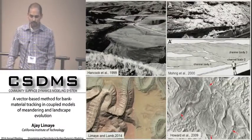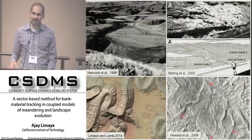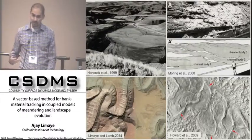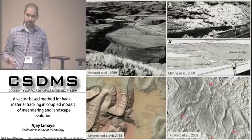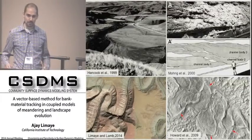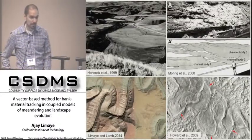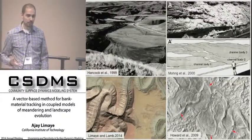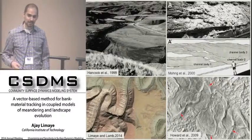Shifting to depositional settings, the migration of channels combined with aggradation is a fundamental control on the architecture of sedimentary deposits. That's true on Earth, but also on Mars, where fluvial deposits are very commonly one of our key constraints on the past climate of that planet.